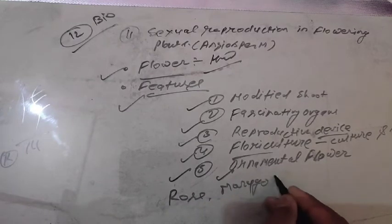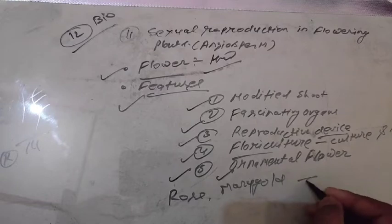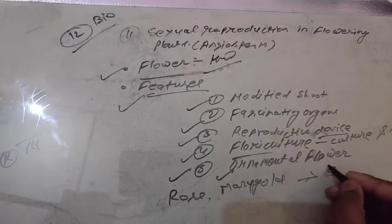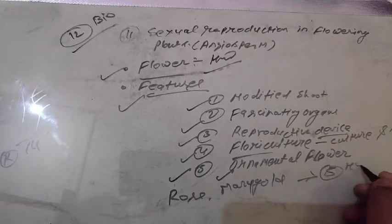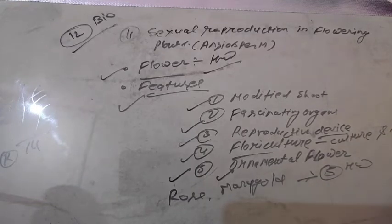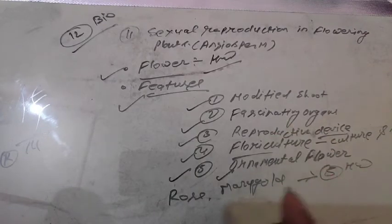The list of ornamental flowers includes rose, marigold, and many more. Your homework is to find out which kinds of flowers are available in your garden — search and write them down.